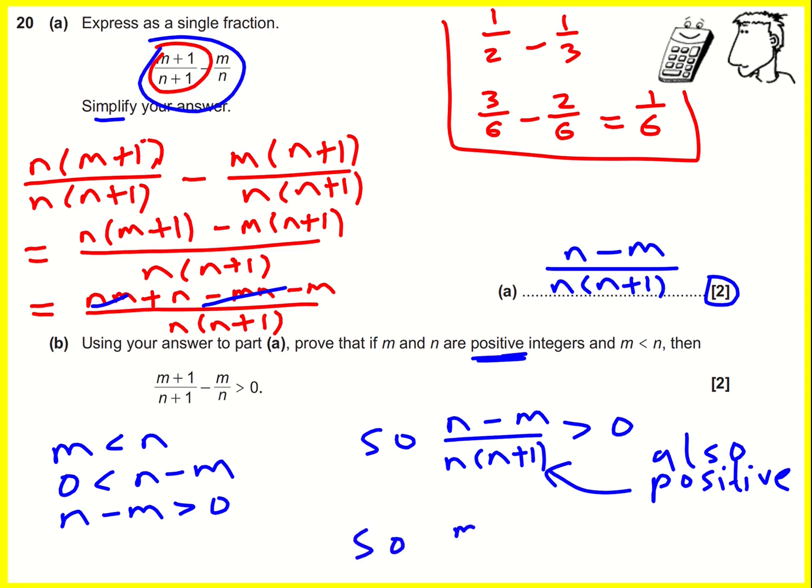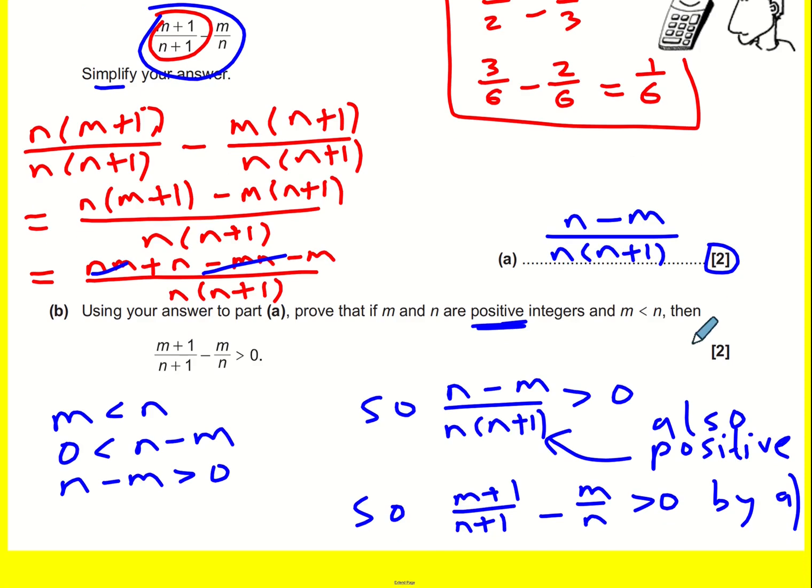And I've just shown in part a that this thing is exactly equal to that thing. So n plus 1 over n plus 1 minus m over n is greater than zero by part a. I should probably just refer back to it.